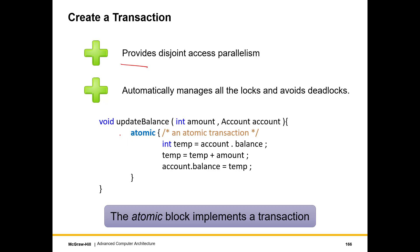To implement the same code using transactional memory, the signature and basic code remain the same, but we enclose the critical section within an atomic block. The transactional memory subsystem automatically ensures that this piece of code executes in an atomic fashion. Whatever locks need to be acquired are acquired, the programmer need not bother, and there will be no deadlocks. This is achieved by simply wrapping the code within an atomic block — starting and ending with curly brackets. The atomic block implements a transaction.